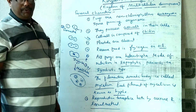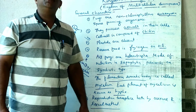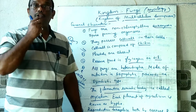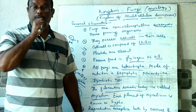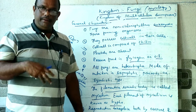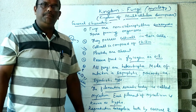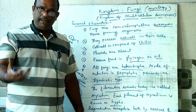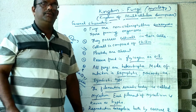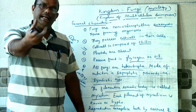So that is all about the general characters of fungi. Examples of fungi include yeast or baking fungi, Penicillium, Agaricus, Saprolegnia, Phytophthora, and others. All fungi are placed in four different classes: Phycomycetes, Ascomycetes, Basidiomycetes, and Deuteromycetes.